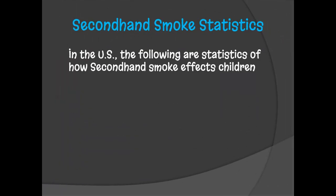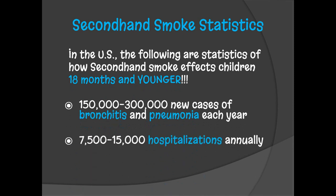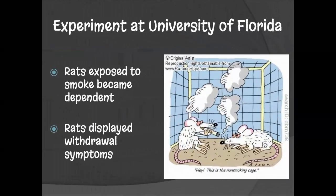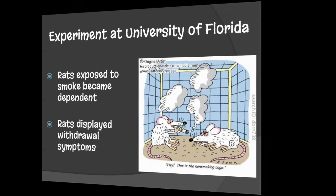Here are more statistics on secondhand smoke. In the United States, for children 18 months and younger, there are between 150,000 and 300,000 new cases of bronchitis and pneumonia each year caused by being around people who smoke. There are also between 7,500 and 15,000 hospitalizations annually. A study from the University of Florida exposed rats to smoke and found that the rats became dependent on it and displayed withdrawal symptoms when not around it — the same withdrawal effects that happen in humans when they don't get nicotine.